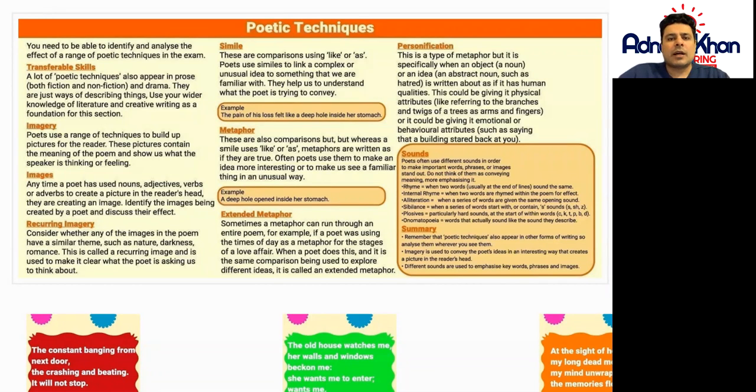Recurring imagery: Consider whether any of the images in a poem have a similar theme, such as nature, darkness, adventure, or romance. This is called recurring imagery and is used to make clear what the poet is asking us to think about in terms of the recurring image or theme.